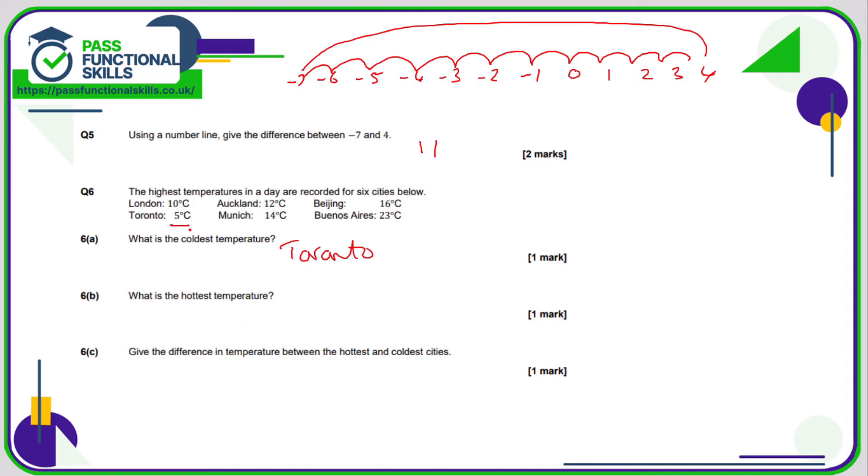The hottest temperature is just the largest number, which is 23, so Buenos Aires. And the difference between the hottest and coldest is the difference between 23 and 5. 23 take away 5, that's a difference of 18 degrees.